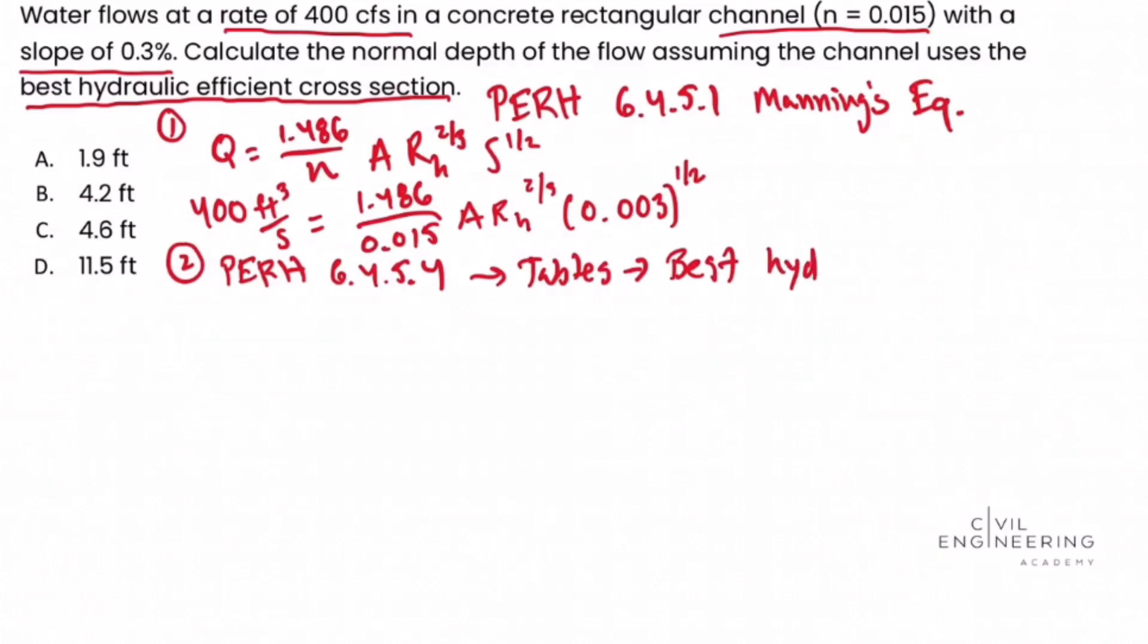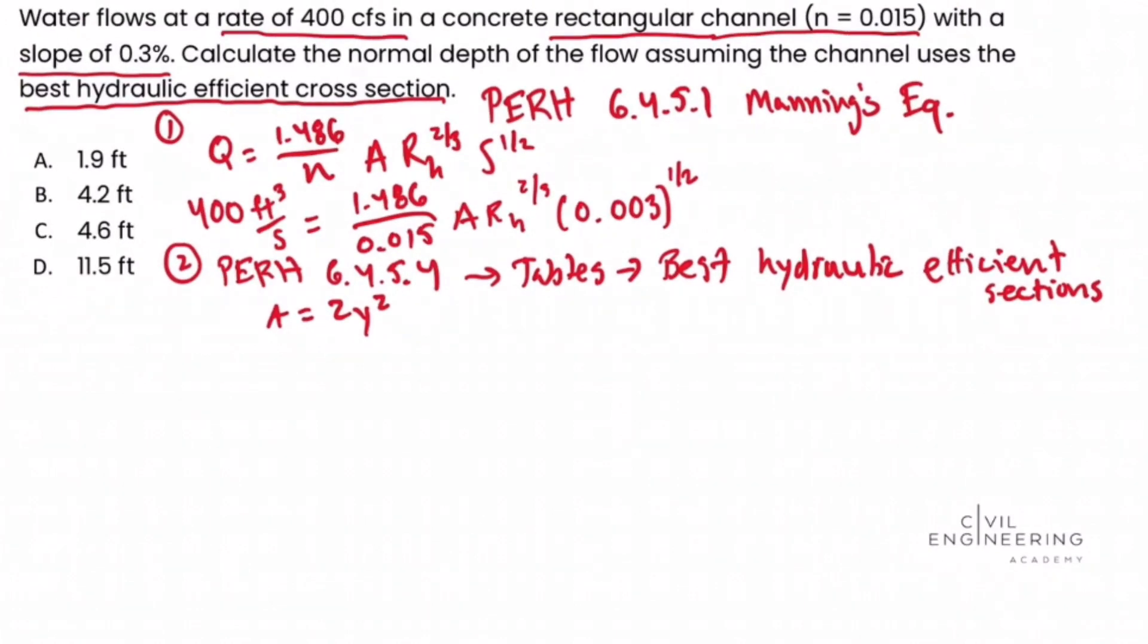You see there's the most efficient hydraulic section for various shapes of channels. In this case, in the problem statement, we're told that we have a rectangular channel. So if we use this chart at 6.5.4, we can see that the area for the most efficient section is equal to 2y squared. And for the most efficient rectangular section, the hydraulic radius R subscript h is equal to 1 half times y.